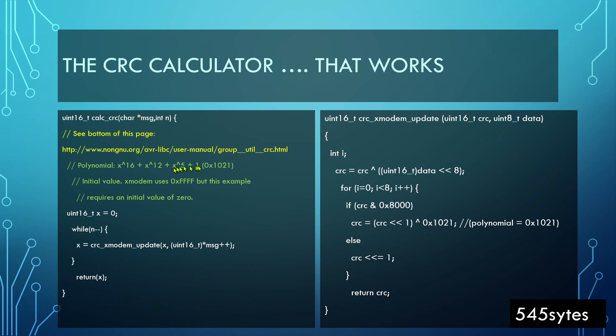This is the polynomial expression that actually calculates the CRC. Maybe the difference between other libraries and this one is that x modem uses 0xFFFF as the initial value, but this example requires an initial value of zero. Maybe, I don't know, this is just a wild guess.